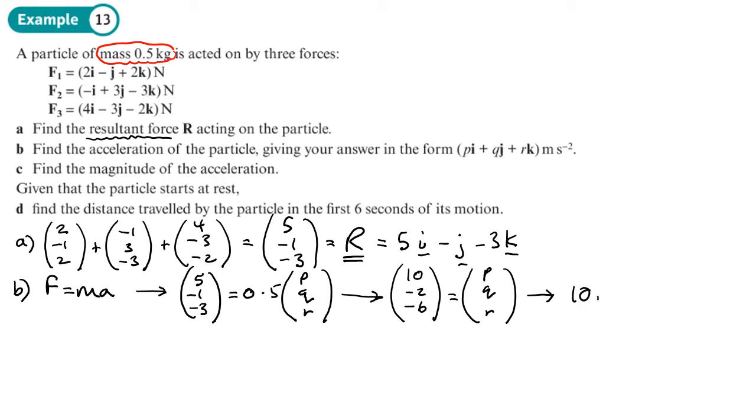Find the magnitude of the acceleration. So that's just finding the size of that vector using Pythagoras. So 10 squared plus -2 squared, so we're up to 104.